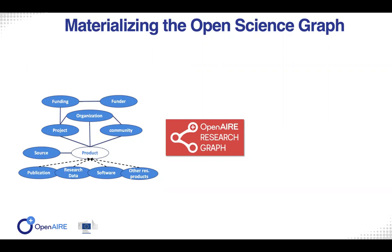Then we have software, which is basically anything that can be compiled, interpreted, or run in order to do some kind of elaboration. And then we have a catchall category which hosts all the research products that are not strictly any of the three categories I mentioned — for example, protocols, workflows, slides, and anything that might be very domain-specific and not broadly accepted as a well-recognized entity across science domains and disciplines.